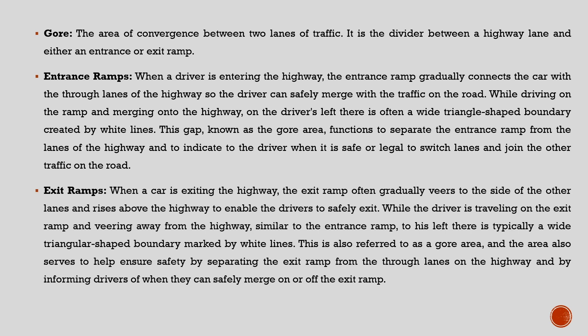When a car is exiting the highway, the exit ramp often gradually veers to the side of the other lanes and rises above the highway to enable drivers to safely exit. Similar to the entrance ramp, to the driver's left there is typically a wide triangular-shaped boundary marked by white lines. This is also referred to as a GORE area, and it serves to help ensure safety by separating the exit ramp from the through lanes of the highway and by informing drivers of when they can safely merge on or off the exit ramp.